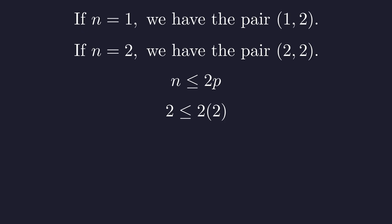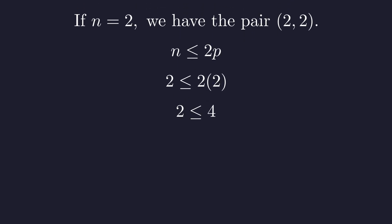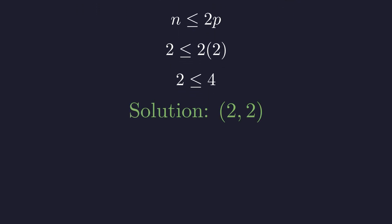We must check this pair against the second condition. Substituting n equals 2 and p equals 2 gives 2 ≤ 2 times 2. This inequality is true. Therefore, the pair (2, 2) is a valid solution. We have now found a second distinct solution.